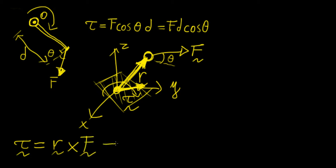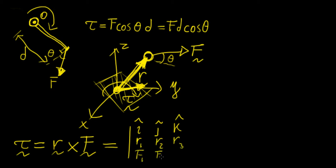We set up the determinant with row one as i, j, k; row two as R1, R2, R3; and row three as F1, F2, F3.